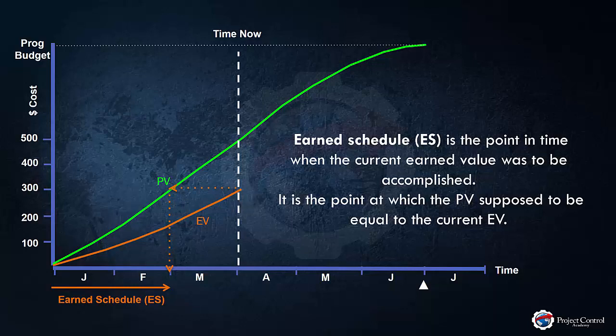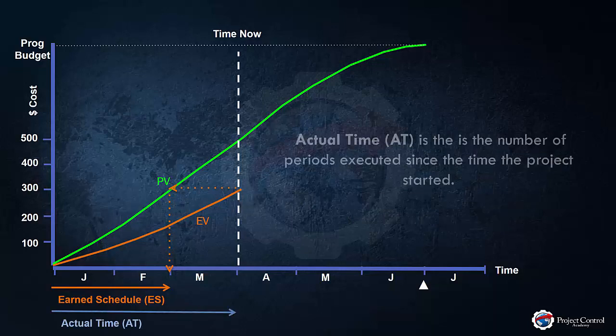Earned schedule is the point in time when the current earned value was to be accomplished — the point at which the project plan value is supposed to equal the current earned value. Another term you need to know is actual time: the number of periods executed since the project started, basically where we are now. In our sample project, we are at the end of March, so we are three months into the project. These periods don't need to be months; they can be weeks or bi-weekly. In our example, periods are months, so our actual time is three months.